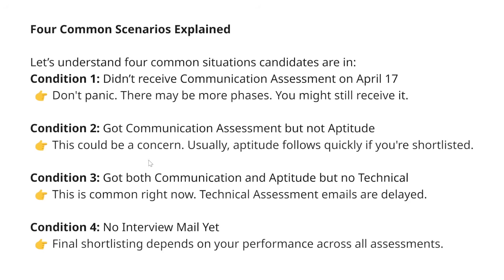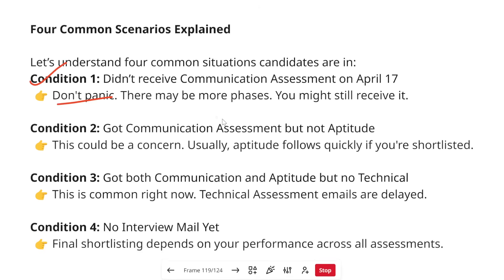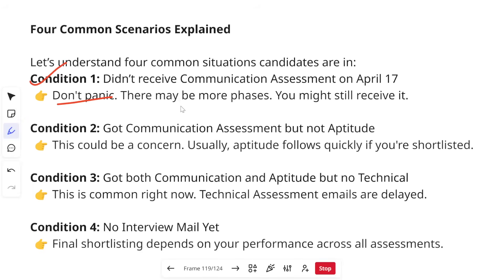Now, four common scenarios based on the doubts you've asked over Instagram DM and the comment section. Condition one: you have registered for the examination but haven't received the communication assessment. Don't panic. There may be more phases for this examination, as has been noticed in the past. What Cognizant usually does is conduct assessments one week, then after about two weeks, another phase of assessments happens. Those who registered now might get their assessment emails in that next phase, so you might still receive your communication and other assessment emails soon.